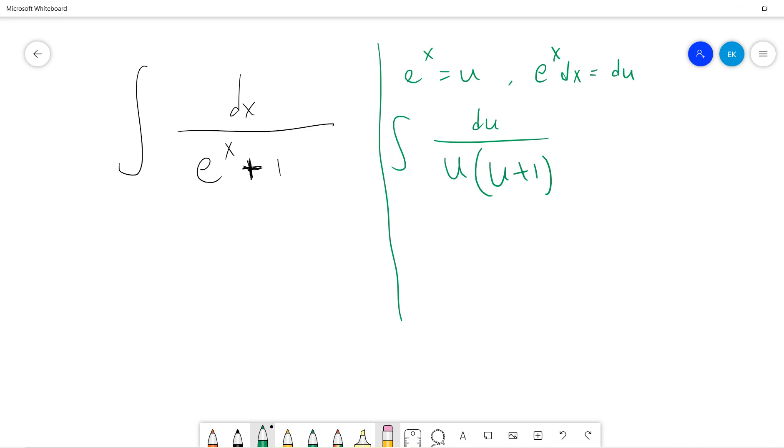So it's basically u, and there is u plus 1, right? So it's u plus 1. Right, so you get, let's see.